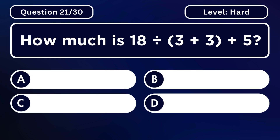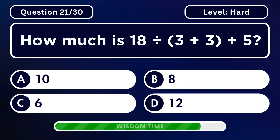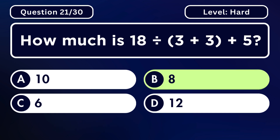How much is 18 divided by the sum of 3 and 3, plus 5? Answer B. 8.